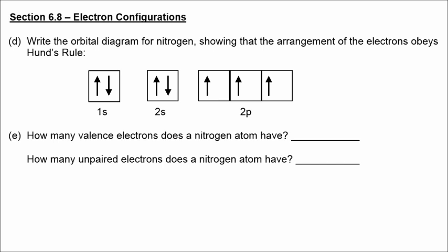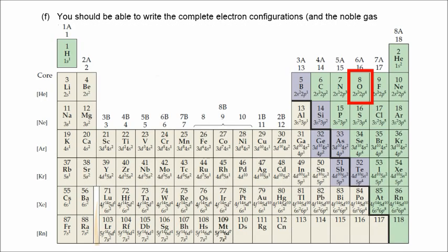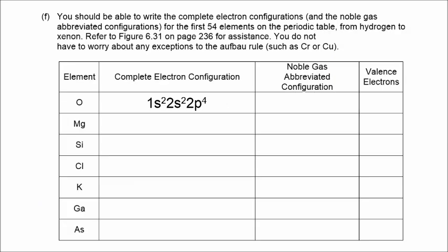Nitrogen has five valence electrons — counting the total electrons in the s and p subshells of the outer shell, level 2. It contains three unpaired electrons represented by single arrows. For oxygen, the electron configuration is 1s2, 2s2, 2p4. We can abbreviate the 1s2 portion with the noble gas helium in brackets. Oxygen has a total of six valence electrons.